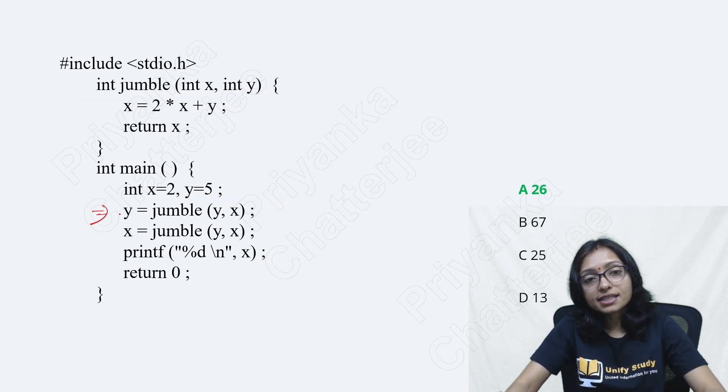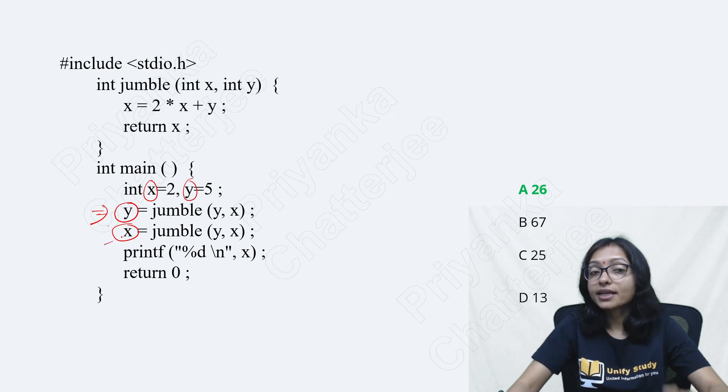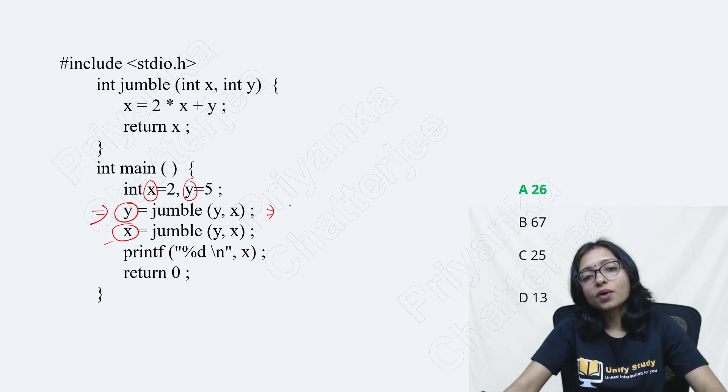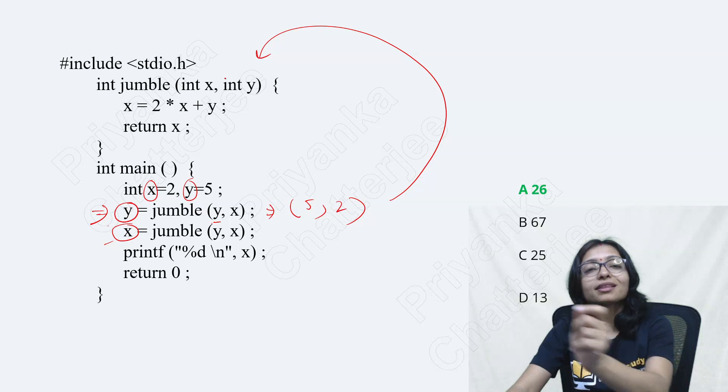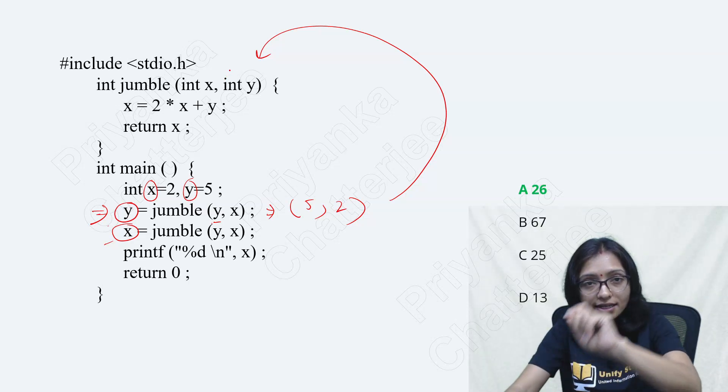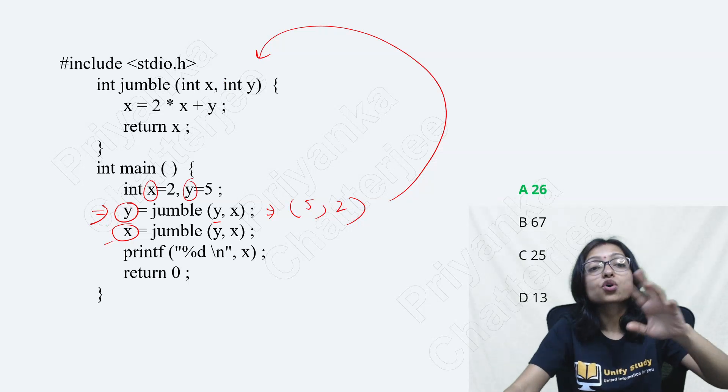Here, whenever you are calling, you can see it is actually the return value. This is also return value. Here also you are using X, here also you are using Y. The X and Y, same variable is used here. Whenever you are calling this one, it is actually will be called with Y value. Y value is 5, then X value is 2. So it will go here. Always remember, argument is following the order. How you are passing the argument? With that same way. The order will be followed here. It is called by value.